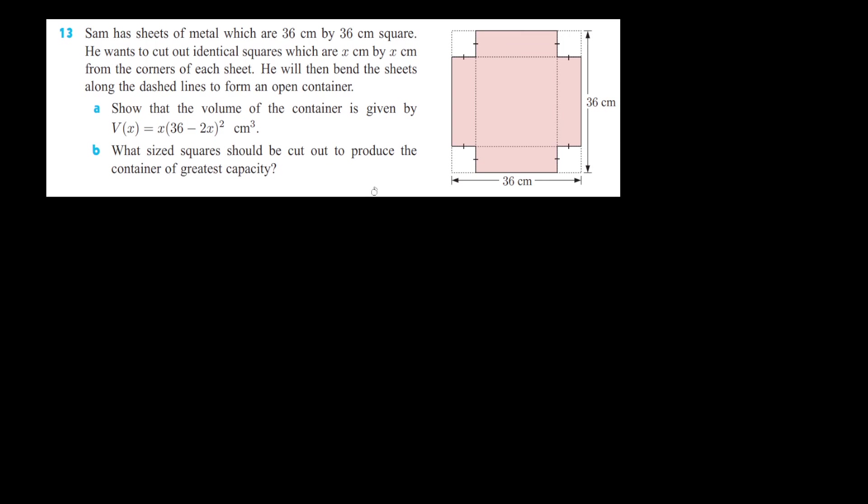It says show that the volume of the container is given by that formula there. The way we show is by touching one side only. So let's find the area of the square multiplied by the height which we know to be x. So the volume is going to be x multiplied by 36 minus 2x squared. Because this is the height times the length times the width and the length equals width.